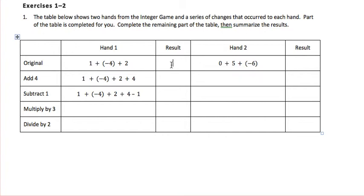So in looking at the two hands, the original score, 1 plus negative 4 plus 2, is negative 1. And in hand 2, 0 plus 5 plus negative 6 is also negative 1. Both hands have different numbers but their total is the same.